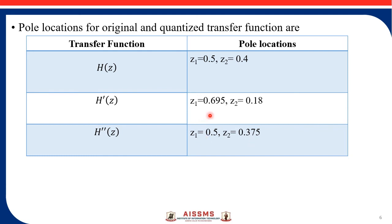So if we see the poles of the direct form 1 realization, one pole is far away from 0.5. And if we see for the cascade realization, the poles are almost closer to the original ones. So that means, for the quantization error, the direct form 1 realization is more sensitive as compared to the cascade realization.